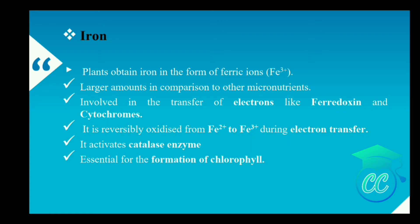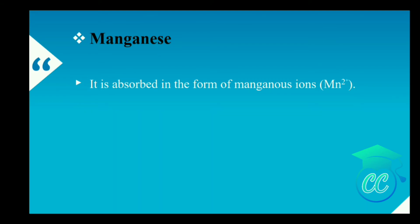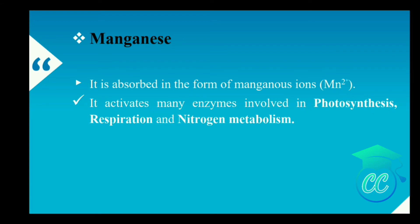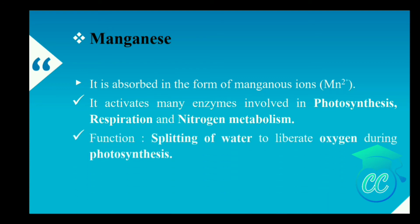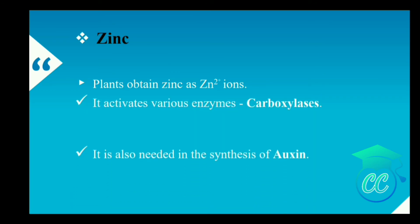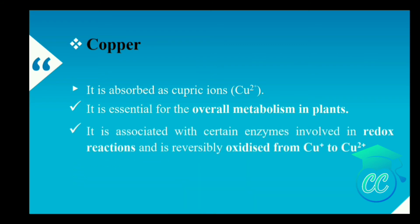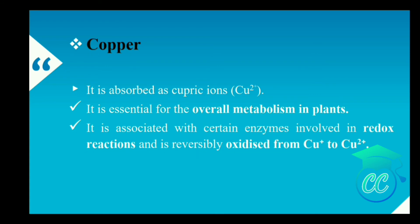Iron is also essential in the formation of chlorophyll. Next, manganese. Manganese is absorbed in the form of manganese ions, and it activates many enzymes involved in photosynthesis, respiration and nitrogen metabolism. The key function of manganese is the splitting of water to liberate oxygen during photosynthesis. Next, zinc. Zinc is absorbed in the form of zinc ions. It activates various enzymes and also helps in the synthesis of auxin. Next, copper. Copper is absorbed in the form of cupric ions. It is essential for overall metabolism of plants and is associated with certain enzymes involved in redox reactions.